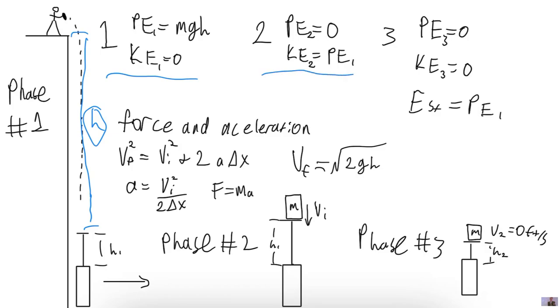Moving on to phase two, we are assuming that in between phase one and phase two, there is perfect conservation of energy because there's no air resistance. Given that, our kinetic energy at stage two will be equal to the potential energy at stage one. If you look at this H1 and this H1, they are equal.